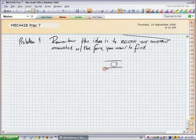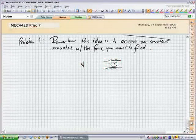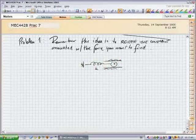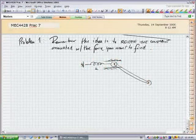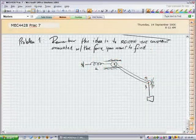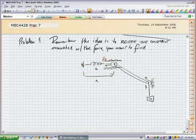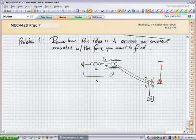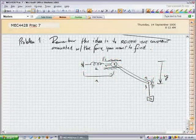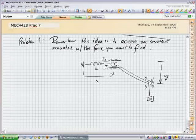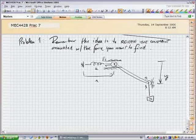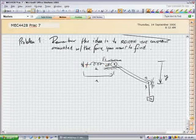So in this system, I've written X and Y in here. Of course you don't have to use those if you don't want, but this is how I've sort of written it down. We're looking for FFS, the spring force. So the idea is to release the constraint associated with the force you want to find. We're looking for the spring force, so we're going to release the constraint associated with that spring force. What do we need to do? Just cut the spring.